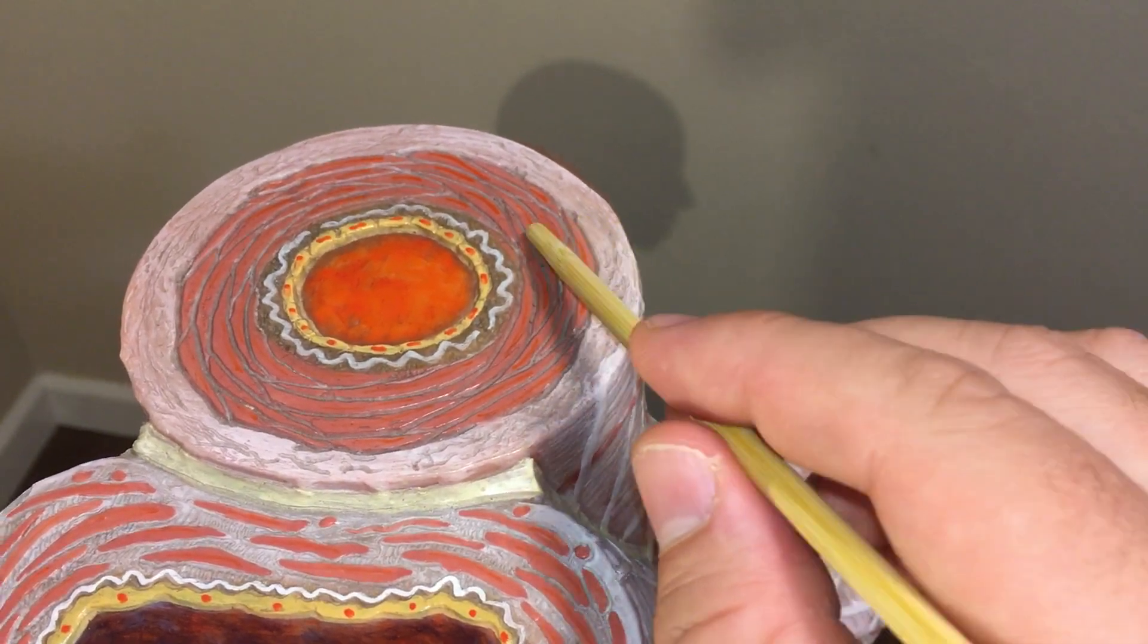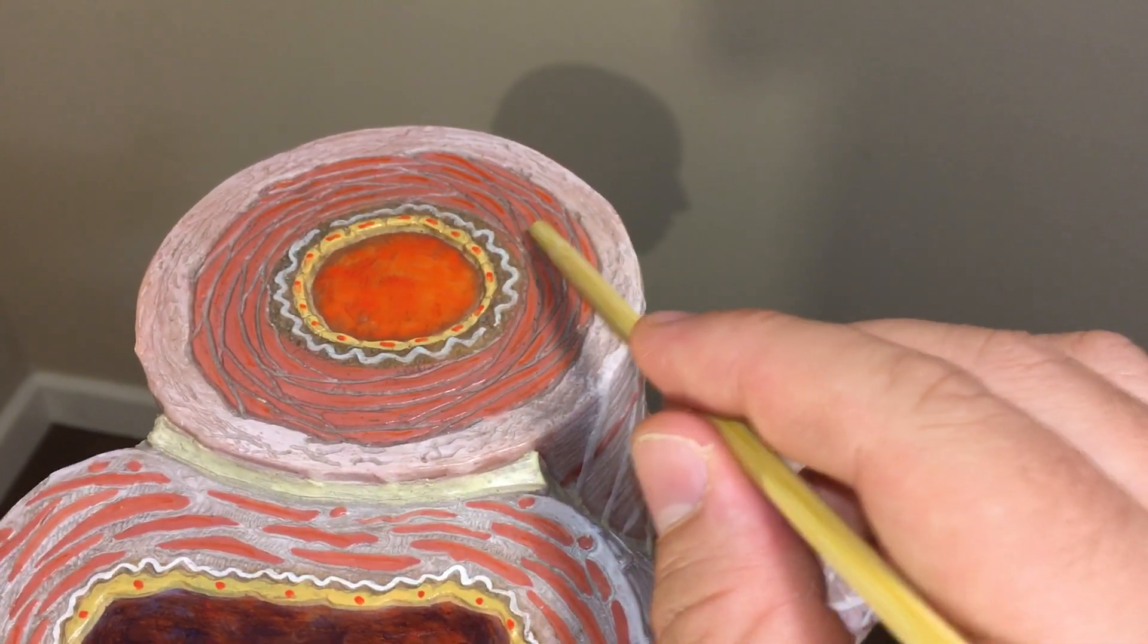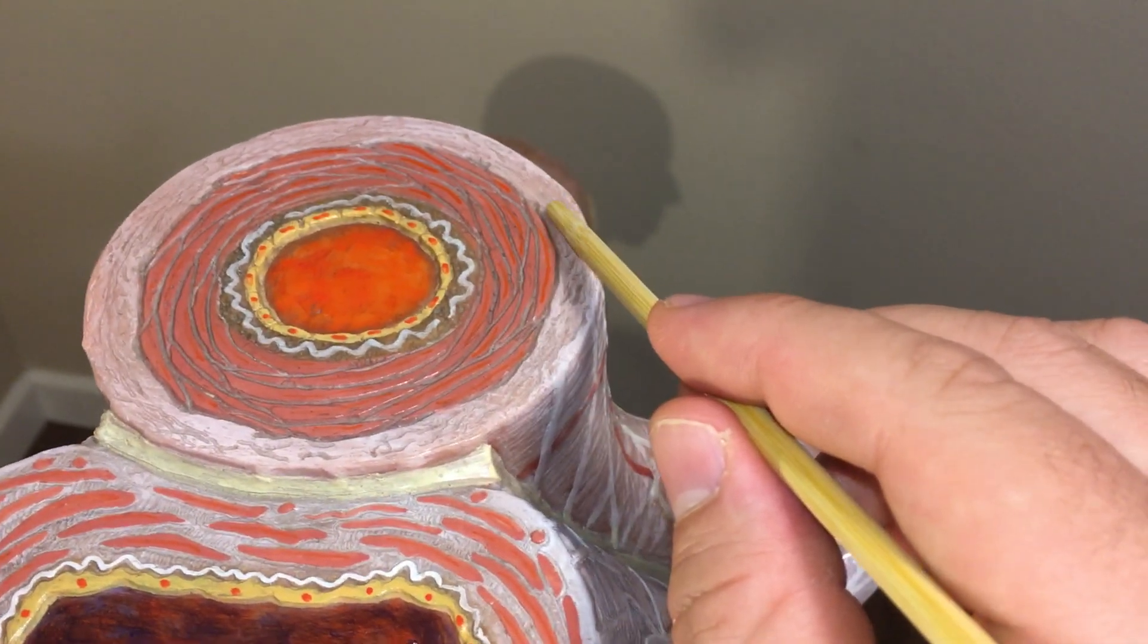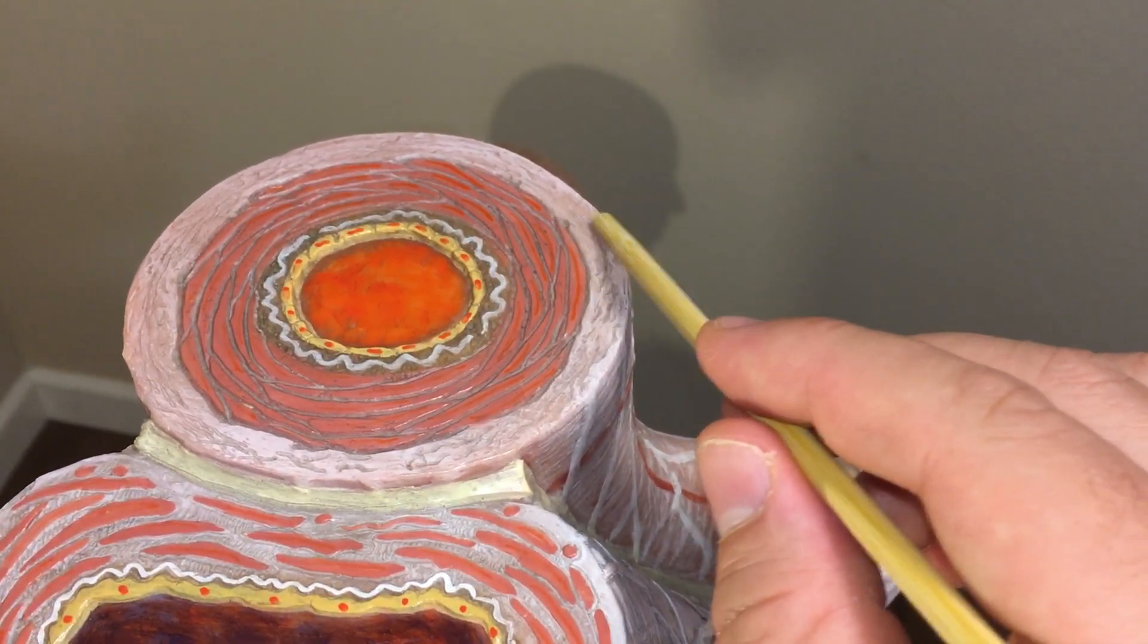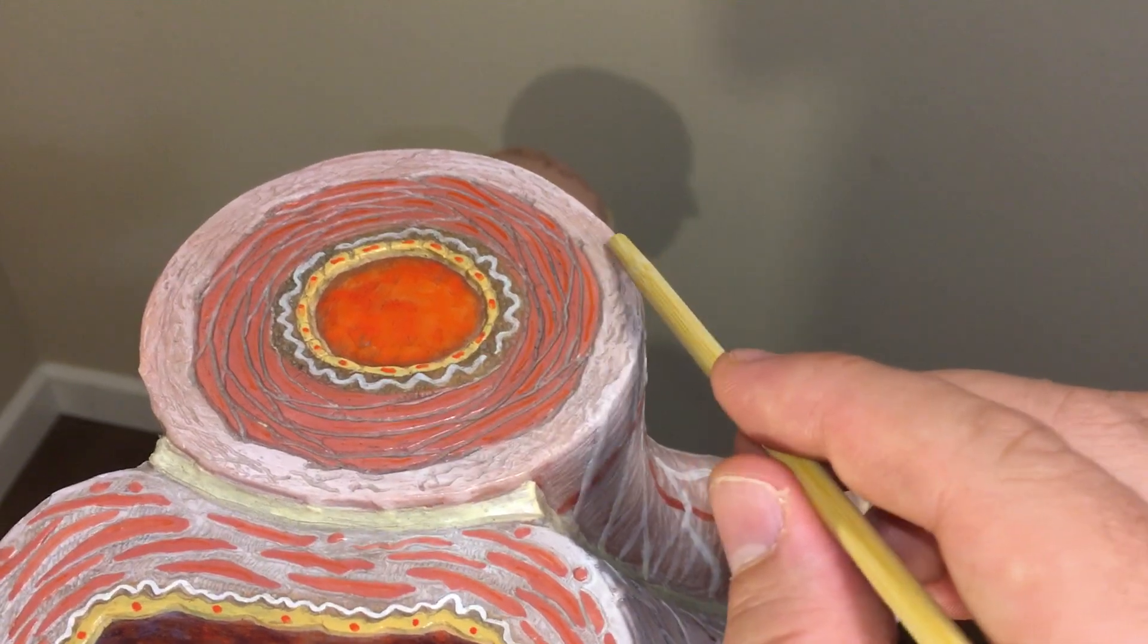Then you have your tunica media, all that smooth muscle. Then you have your tunica externa right here. Starts a little bit of all that connective tissue.